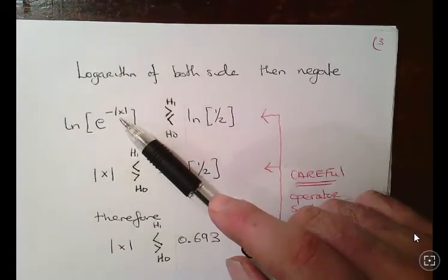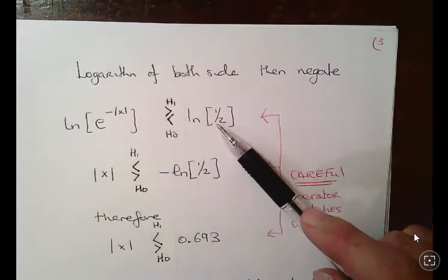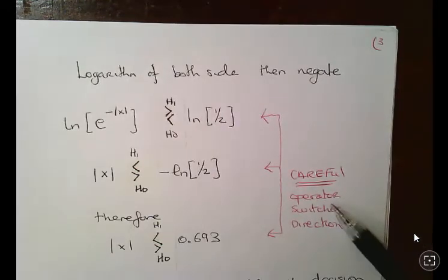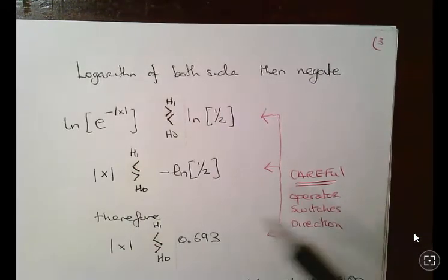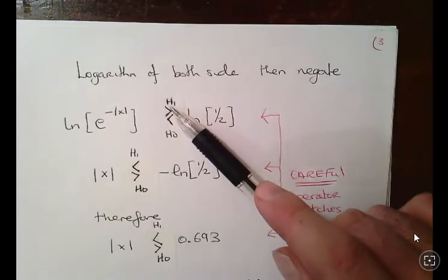Now this is important here, careful: the operator switches direction when we change the sign. So if it's greater than the threshold, it's H1. Now it switches around.